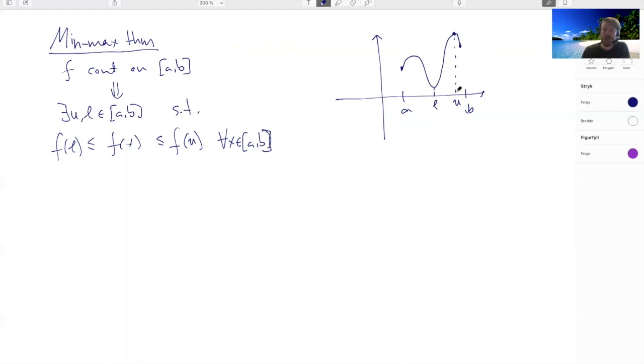Now we already have proven the bounded function theorem and the bounded function theorem gives us the existence of a height c and minus c such that this graph here lies above that line and below that line.